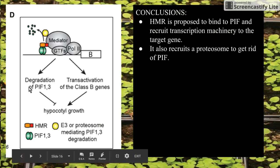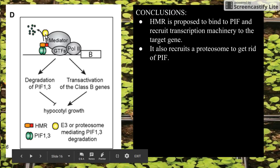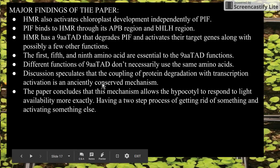At the end of the paper they have a summary figure — hemera, shown in orange, binds to the interacting factor and mysteriously recruits all this machinery to transcribe the class B gene. It also recruits the proteasome, shown in yellow, which degrades the interacting factors. Their conclusion is that this one protein is doing all the magic.